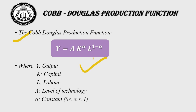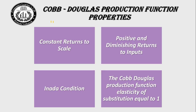In simple terms, the Cobb-Douglas production function is a modification incorporating technology along with labor and capital. The Cobb-Douglas production function has four properties: (1) constant returns to scale, (2) positive and diminishing returns to inputs, (3) the Inada condition, and (4) elasticity of substitution equal to 1.